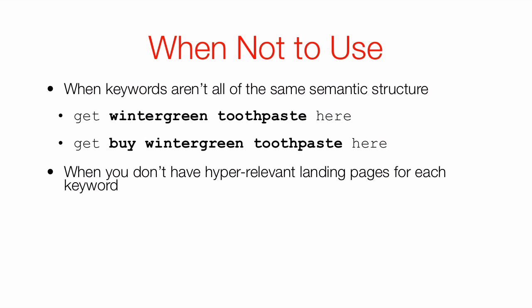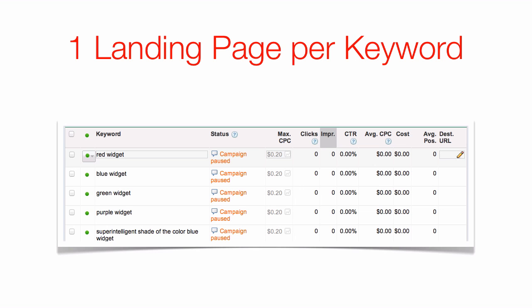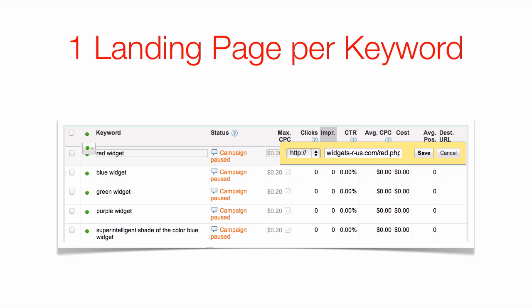The best way to create hyper-relevant landing pages for each keyword is to change the destination URL for each keyword in your ad group. You can do that right here: look at the keyword 'red widget,' go to the right, and you'll see a pencil icon next to the destination URL. Click on the pencil and it opens an editor where you can put in a special landing page for red widgets. Do the same for blue, green, purple, and all keywords in a Dynamic Keyword Insertion ad group.